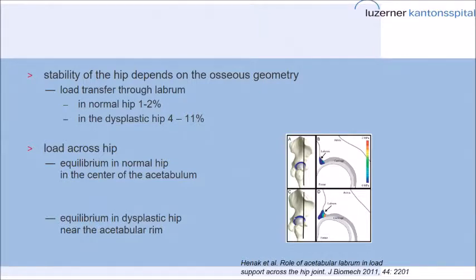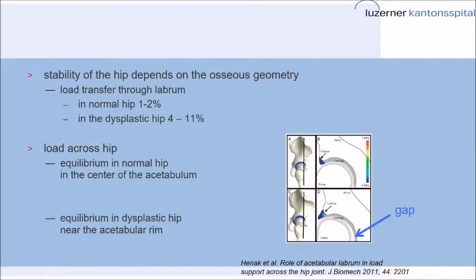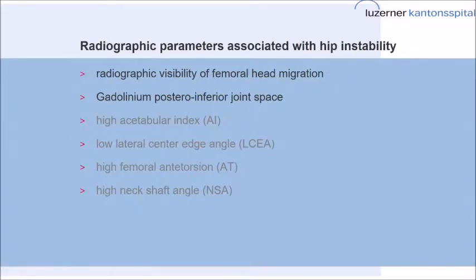We know that the stability of the hip depends on the bony geometry. The load transferred to the labrum in a normal hip is negligible, in the dysplastic hip a little bit higher. If you have load across the hip, the equilibrium in the normal hip is in the center of the acetabulum, and in the dysplastic hip it is near the acetabular rim. We have an opening posteriorly as soon as the hip is loaded — a gap posteriorly — which can be helpful later in identifying stable hips.